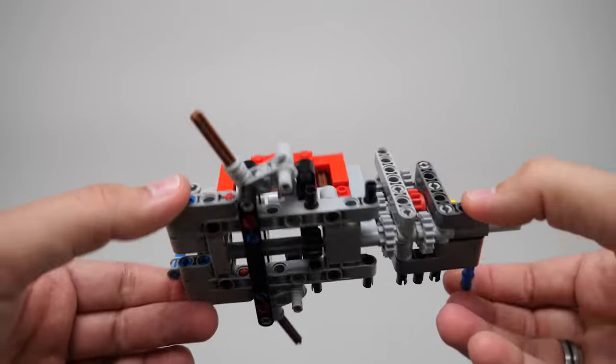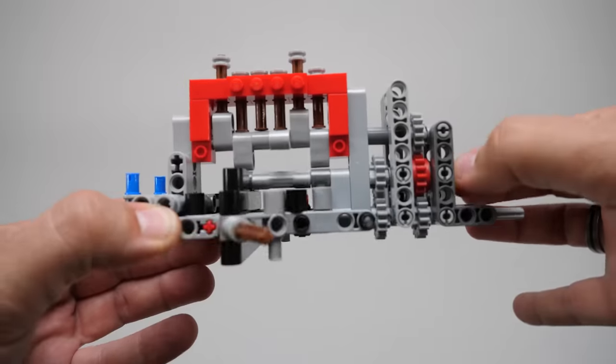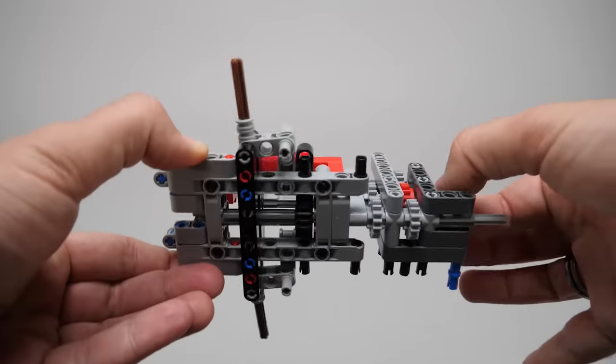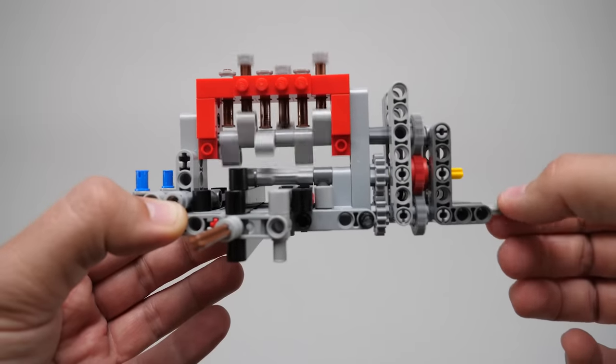Take a look here how the shafts for the different functions were swapped. Now steering is controlled by the upper axle, and the lower axle drives the fake engine.